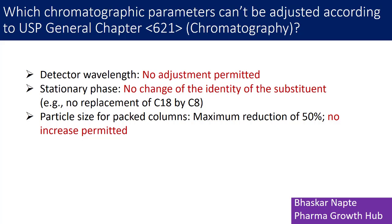The reason an increase in particle size is not allowed according to USP General Chapter 621 is that increasing particle size compromises surface area. If the surface area is reduced, the interaction of the analyte with the stationary phase is reduced. This reduced interaction results in poor retention and poor resolution, which is unacceptable chromatography. For that reason, an increase in particle size for packed columns is not permitted. Thank you so much.